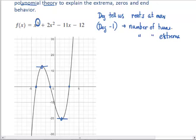The last thing in polynomial theory we use is we look at what the end behavior would be by looking at the last term.